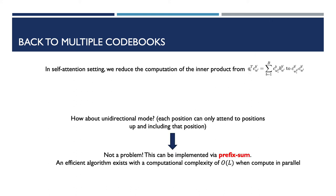Previously, we only considered bidirectional attention mode. That is, each position can attend to any other position in the input sequences. However, in terms of recommendation, we favor a unidirectional attention mode. This is also not a problem. We can implement it via prefix sum. That is, we can compute the prefix sum of the code word histogram. An efficient algorithm exists for this problem with a computational complexity of O log L when computed in parallel.